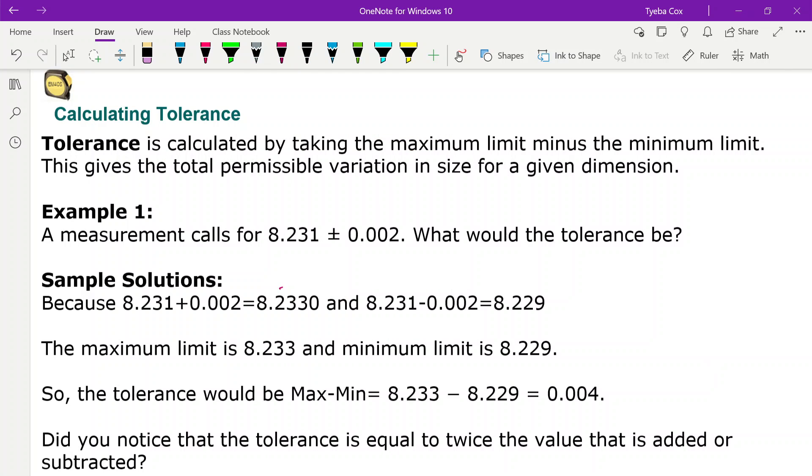Calculating tolerance. Tolerance is calculated by taking the maximum limit minus the minimum limit. This gives the total permissible variation in size for a given dimension.